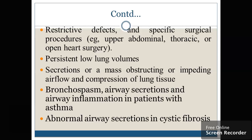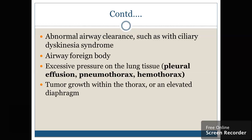If the patient is having low lung volume, the patient may develop this disease condition. If there is an abnormal airway clearance such as ciliary dyskinesia syndrome, or if there is a hemothorax or excessive pressure on the lung tissue. Also, if the patient is having a tumor or cancer within the thorax, there will be an elevated diaphragm and collapse of the lung.